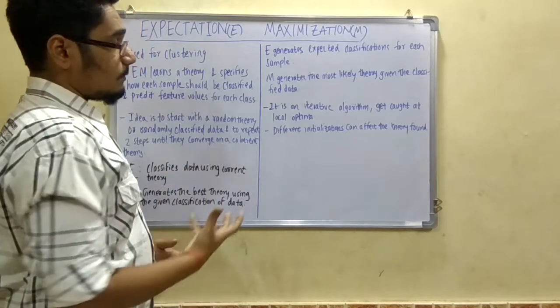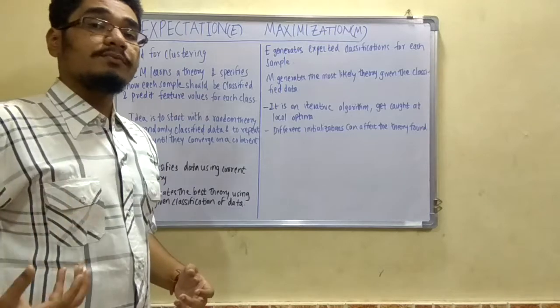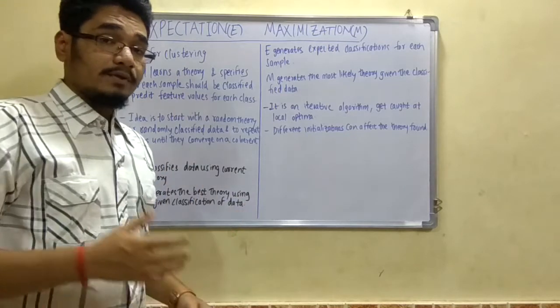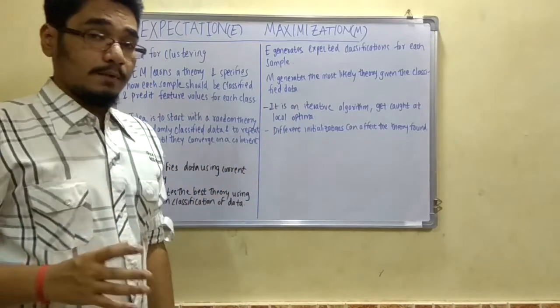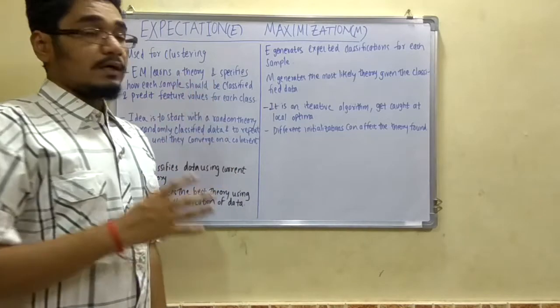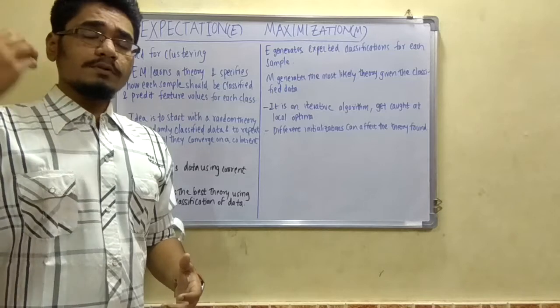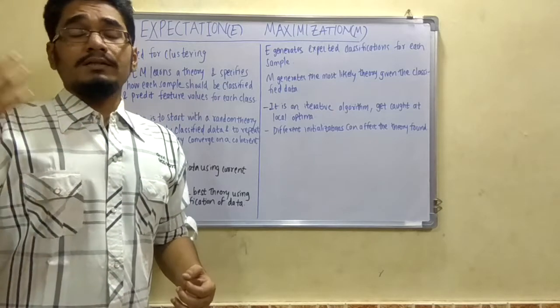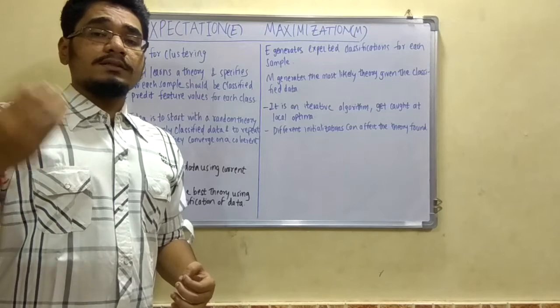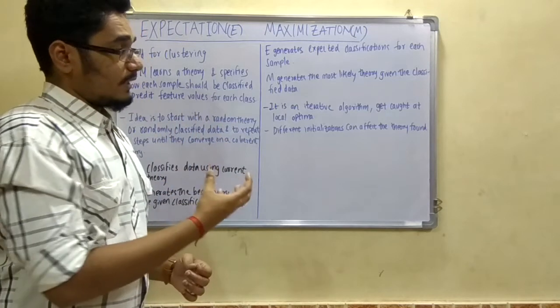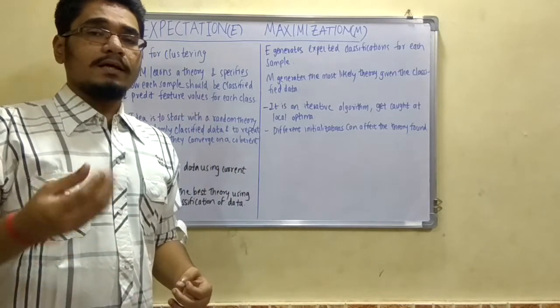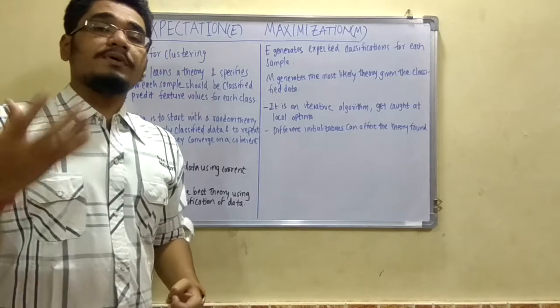Why does this local optima occur? Because of the different initialization conditions that we input to this EM algorithm. In the EM algorithm at certain points we do initialization at some random values. These random values are such that it can be caught easily at any point - it will not further explore any other points.